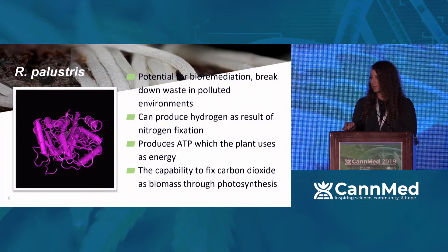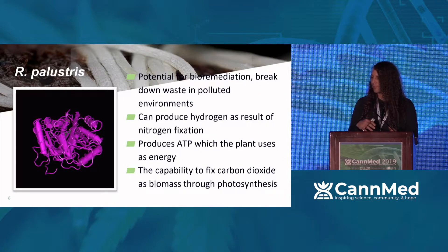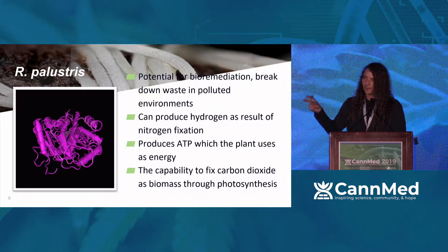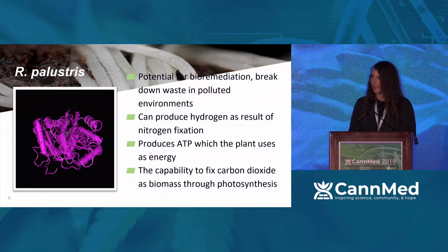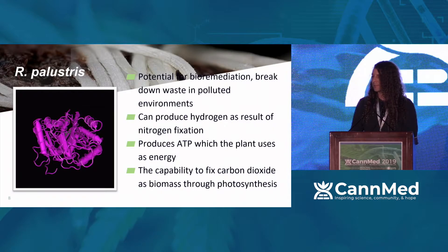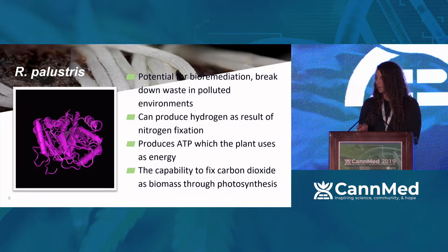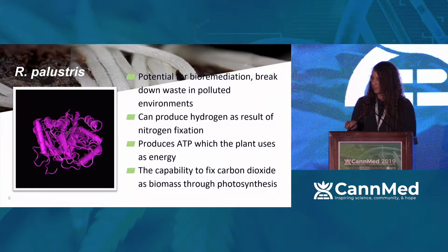Rhodopseudomonas palustris is able to use that energy — infrared and ultraviolet — to feed its food source and fix carbon out of carbon dioxide from the atmosphere. So your plant doesn't have to expend energy to fix carbon when Rhodopseudomonas palustris is doing it for you. Your plant may then use that energy to produce biomass, produce cannabinoids — we don't really know. This struck me as really interesting.